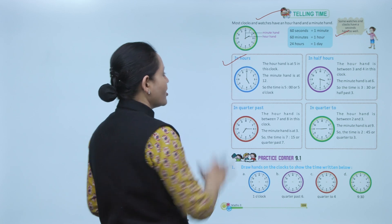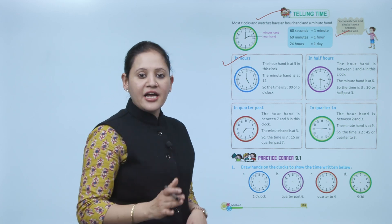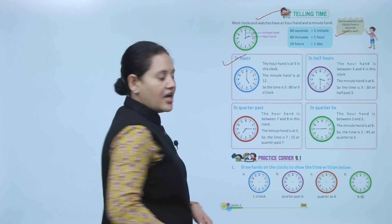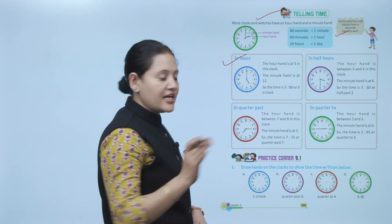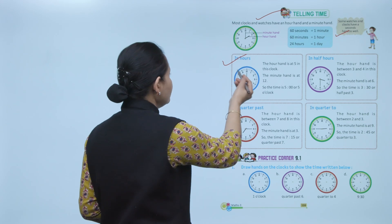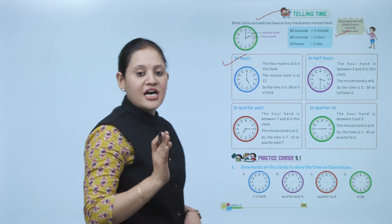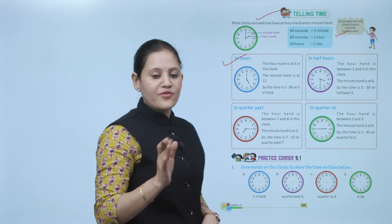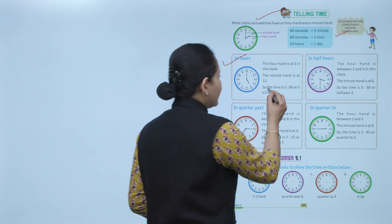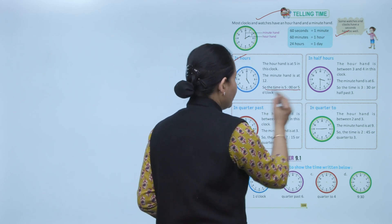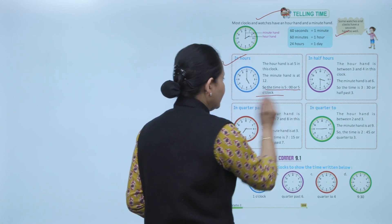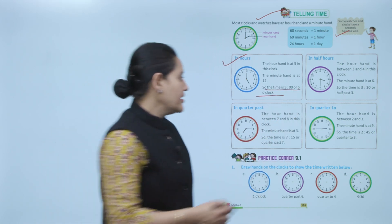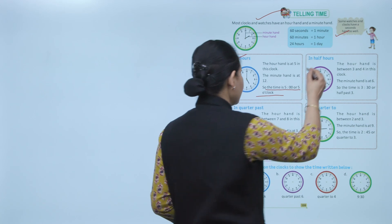Here, in this clock, the hour hand is on 5 and the minute hand is on 12. So the time on the clock is 5 o'clock. We can write it as 5:00 or 5 o'clock.